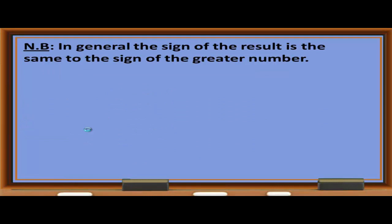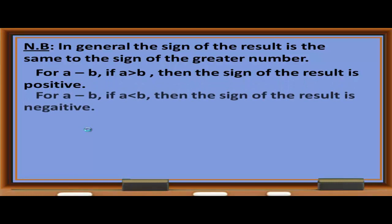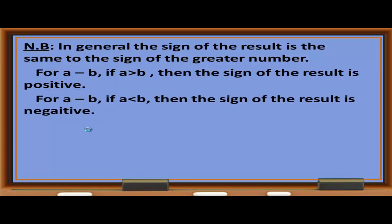Note: In general, the sign of the result is the same as the sign of the greater number. For A minus B, if A is greater than B, the result is positive. If A is less than B, the result is negative. Also, negative times negative is positive — A minus (negative B) equals A plus B.